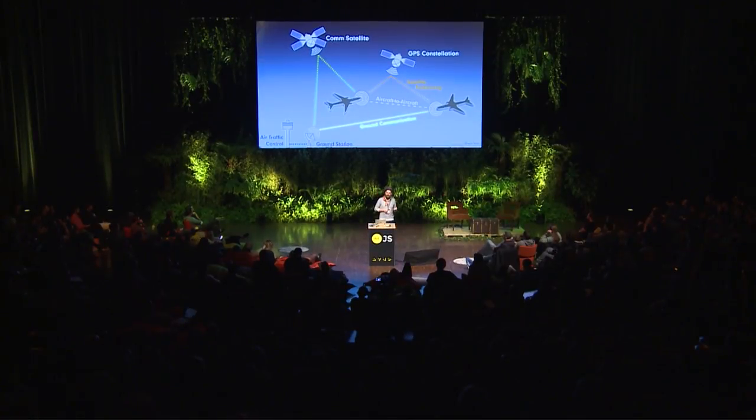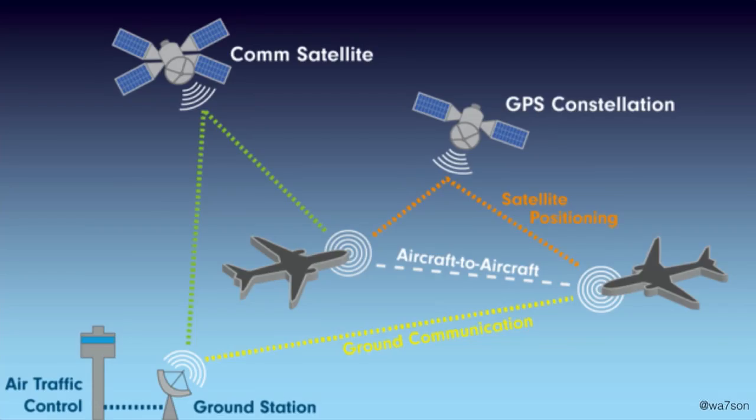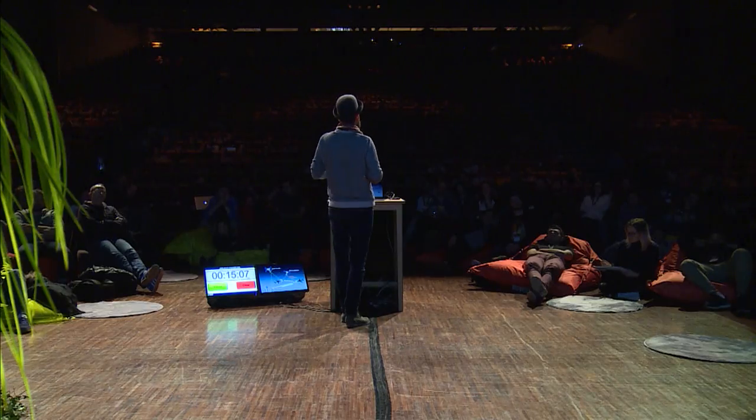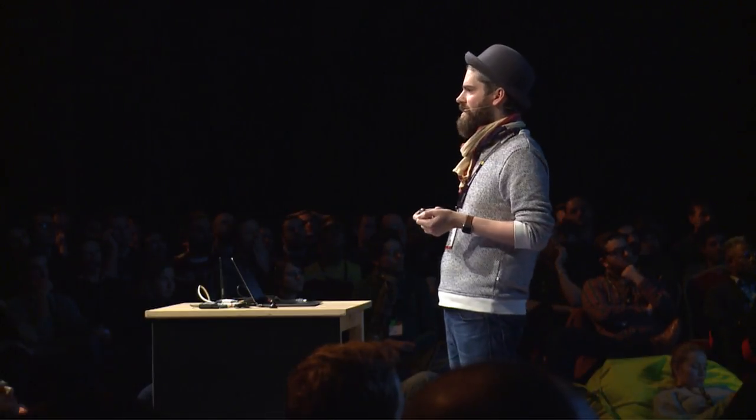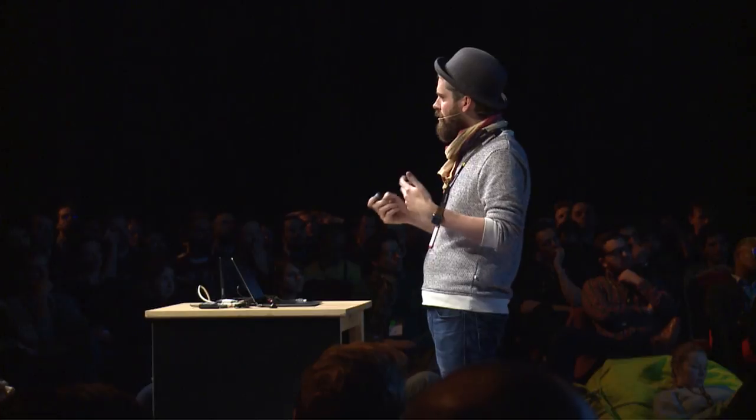ADS-B stands for Automatic Dependent Surveillance Broadcast — it sounds very military. The way it works is that all planes have GPS nowadays, so they know exactly where they are. They get information from GPS satellites, they know how fast they're flying, how high they are — a lot of information about themselves. So they extended the signal on 1090 megahertz to include all this extra information.